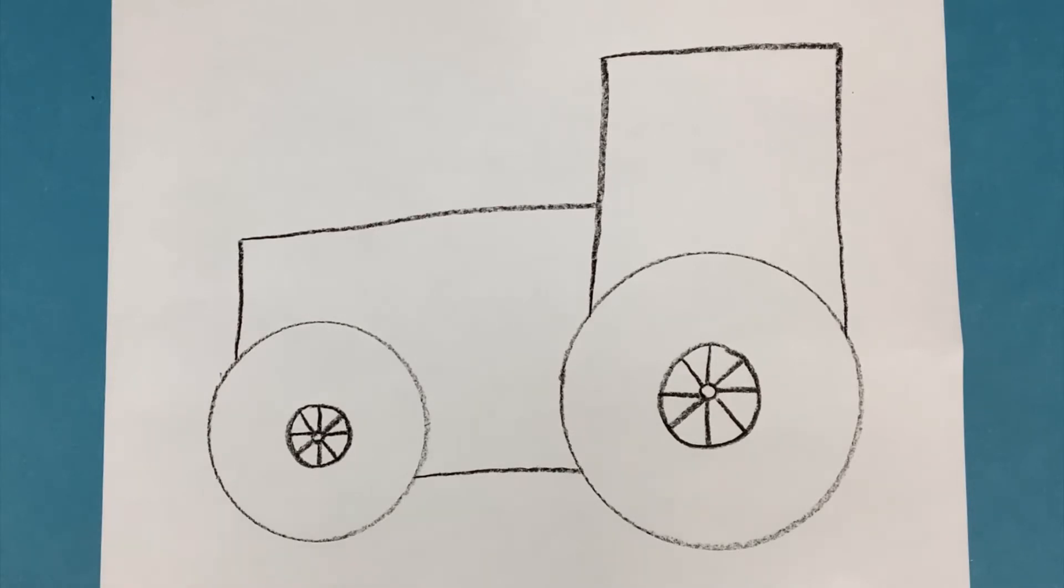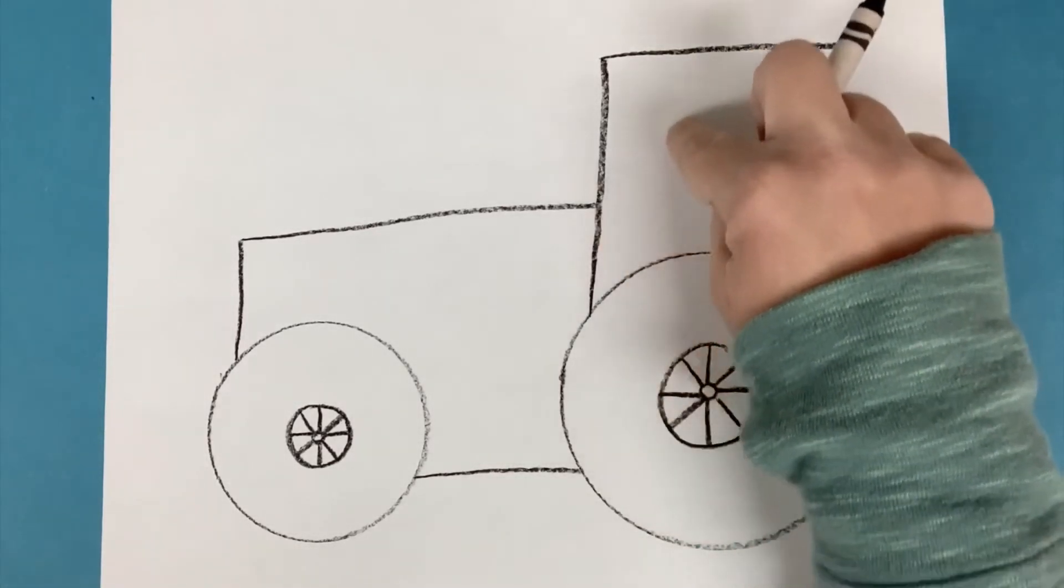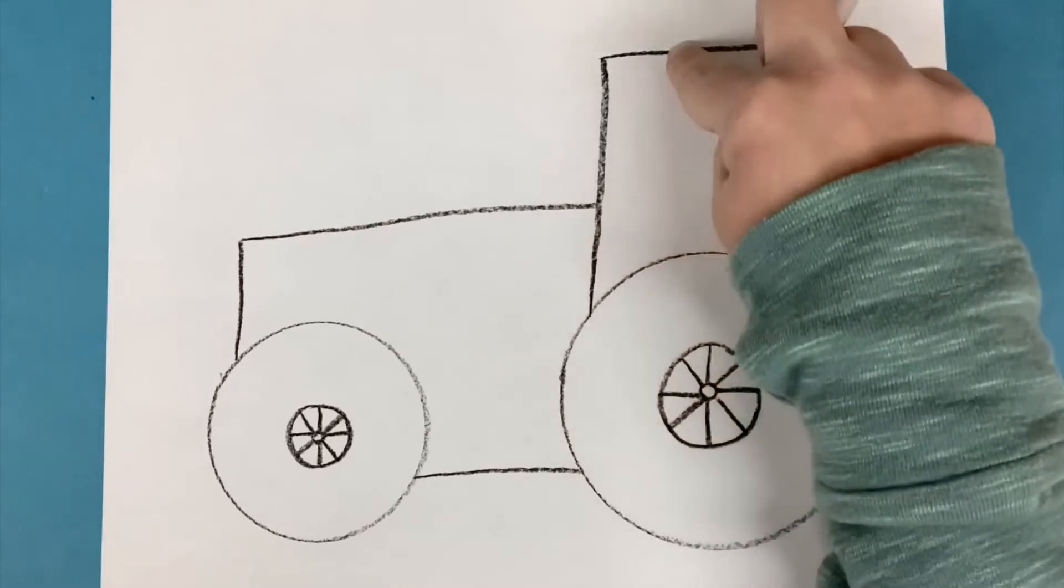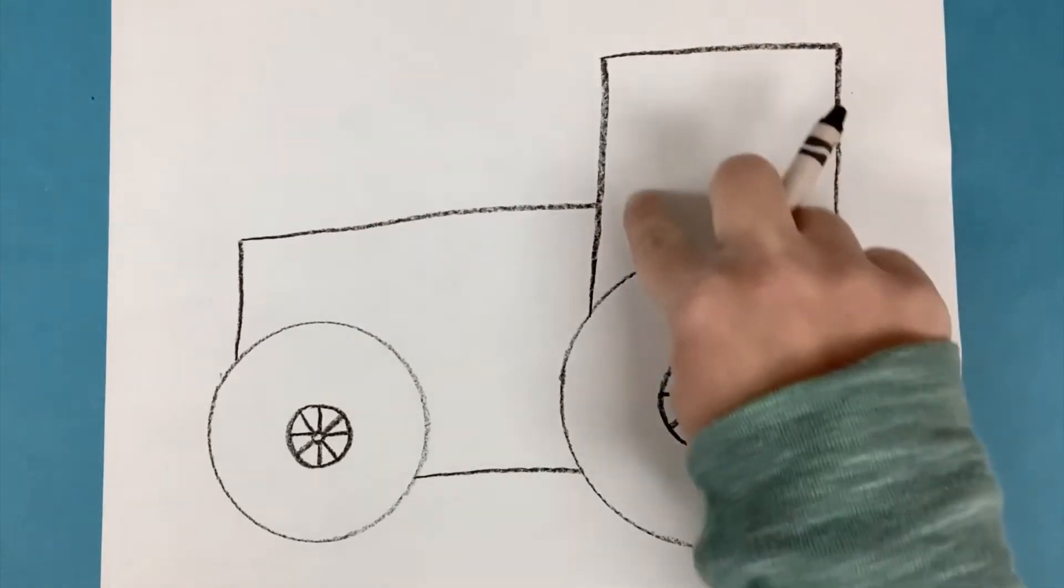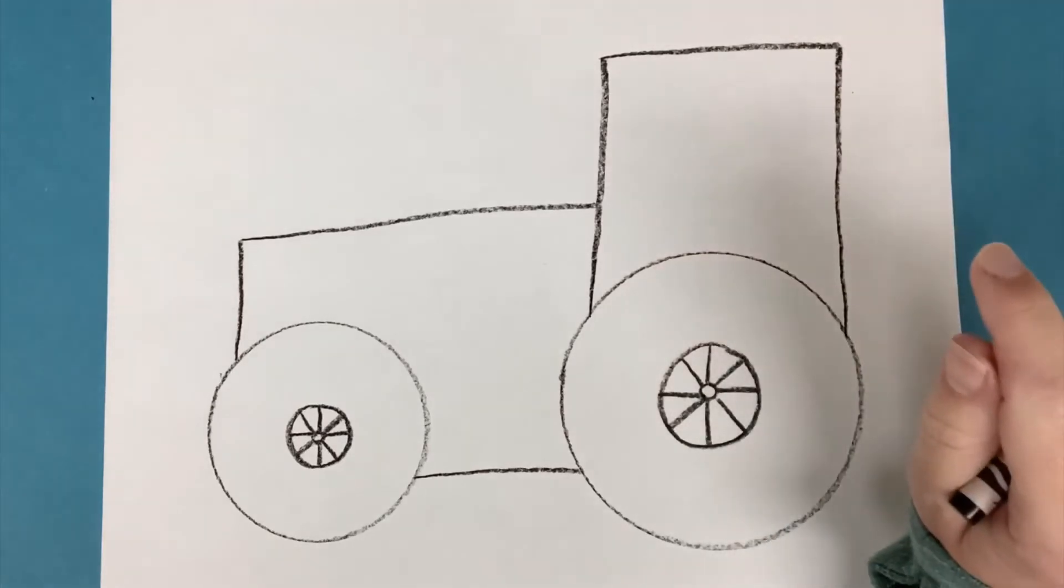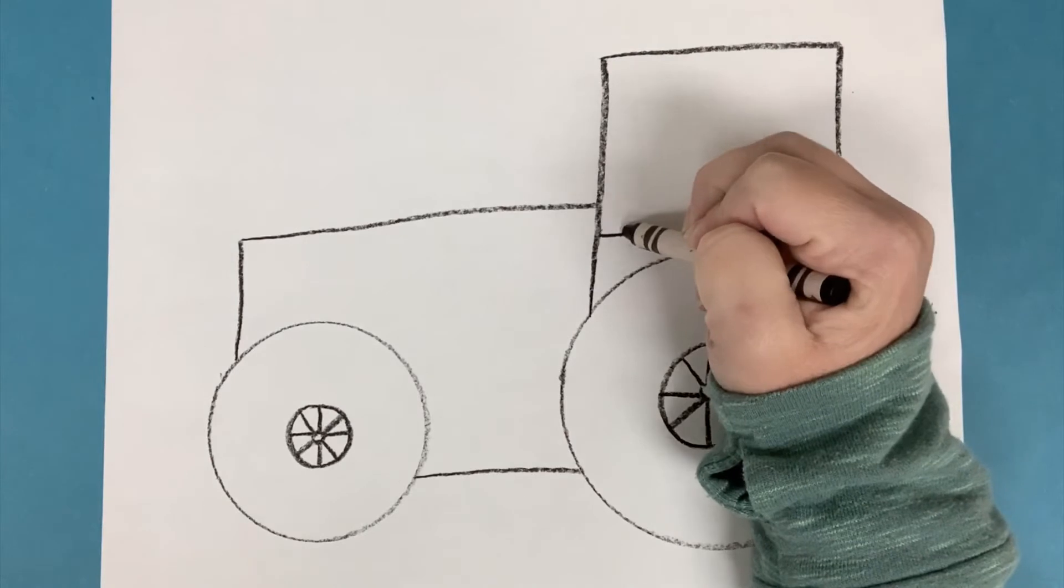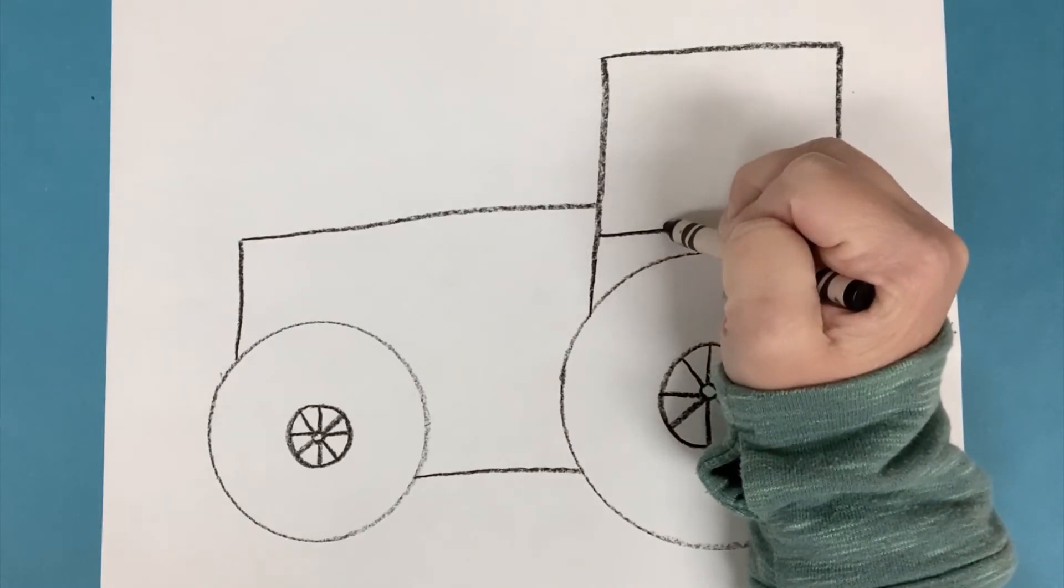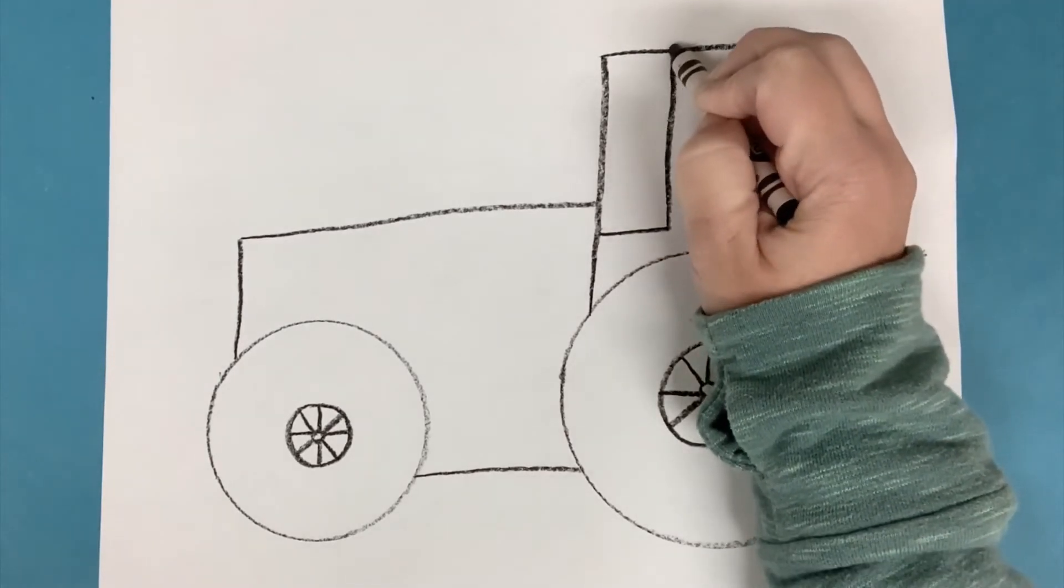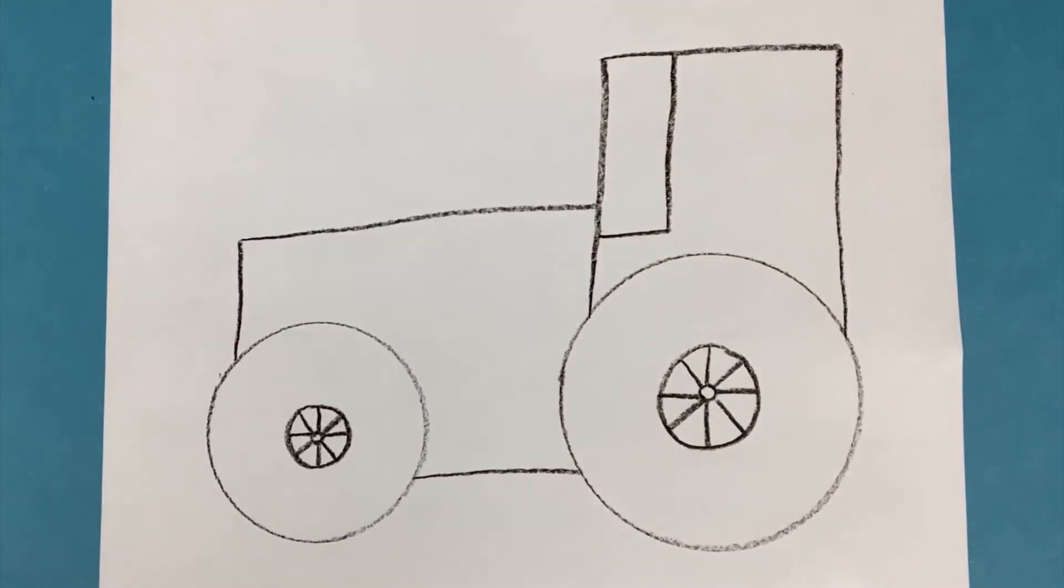The first thing I'm going to do is add a rectangle for a window. So I'm going to go right to this section here of the cab. This would be called the cab of the tractor. It's where the person sits to drive it. And I'm going to make a horizontal line that's sort of short and then a vertical line going up.